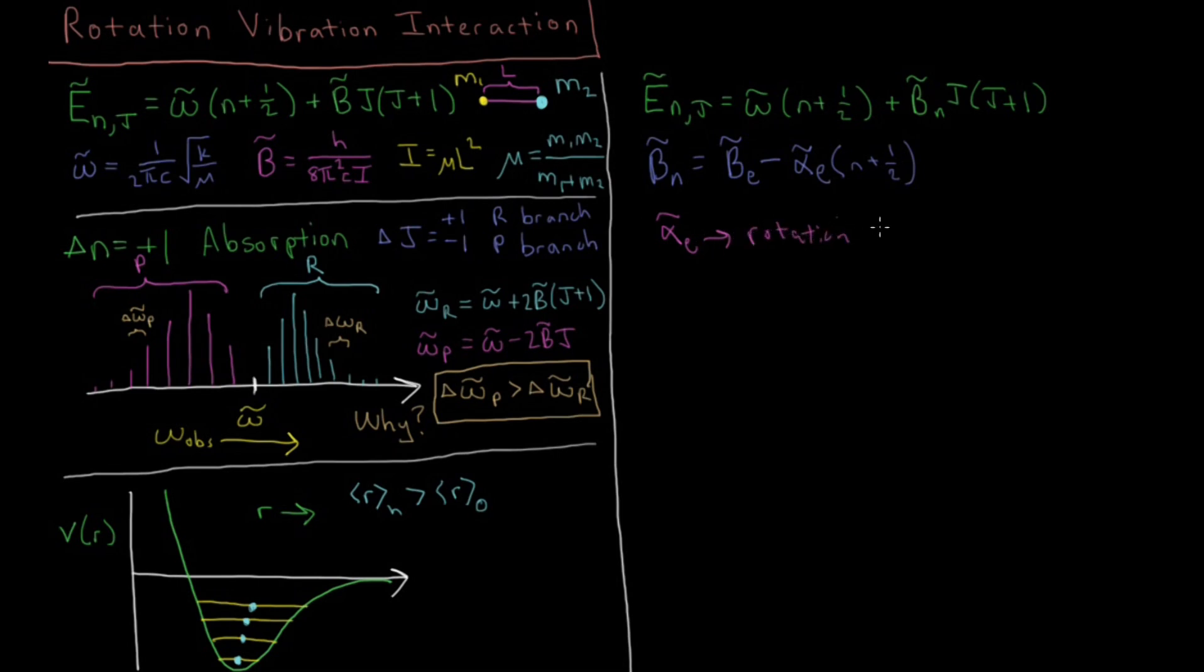And then this constant α̅ₑ we would just refer to as something like the rotation-vibration interaction constant. So it's going to determine how much the bond lengthening at higher rotational levels affects our rotational constant.